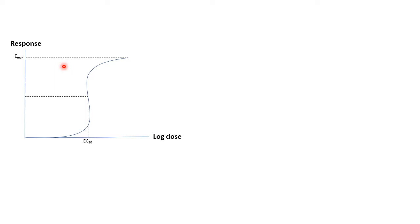This happens because all the receptors are occupied by our drug. At half the Emax, if we extrapolated down to the x-axis, we get the EC50 — the dose that elicits half the Emax.